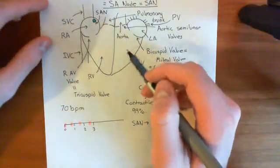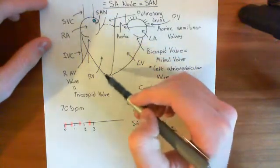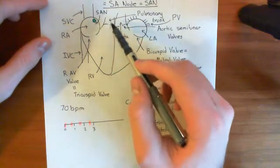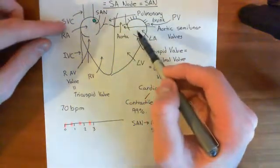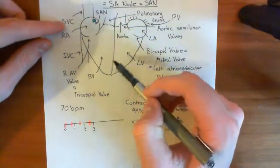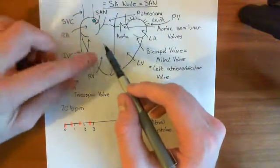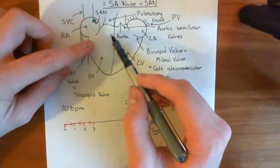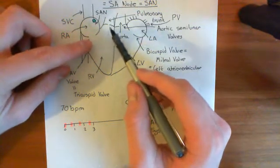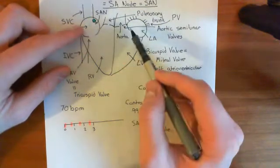Now what's going to happen is we need to cause ventricular systole — we need the ventricles to contract. So we need this action potential that has propagated along the atria to propagate into the ventricles. In this septum that separates the atria from the ventricles, there is one little gap that allows the action potential to propagate through from the atria to the ventricles.